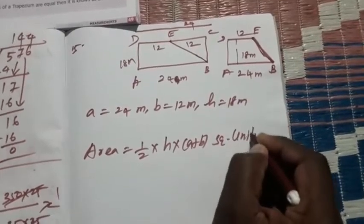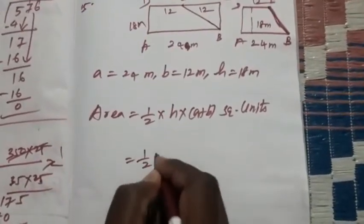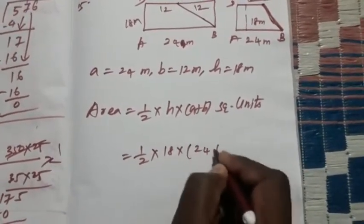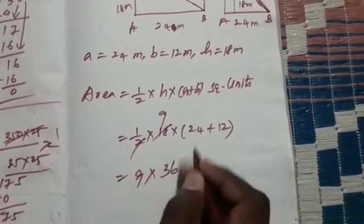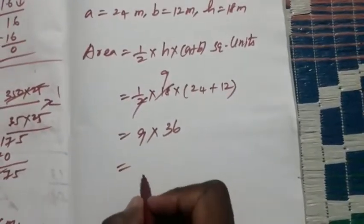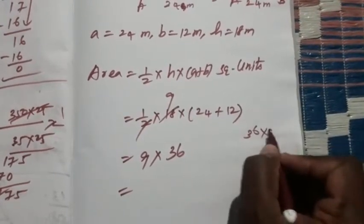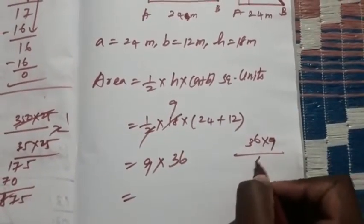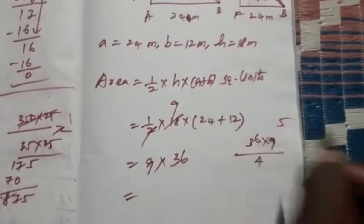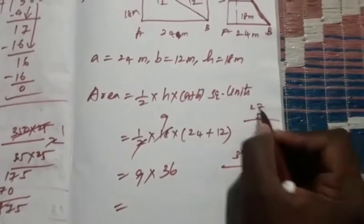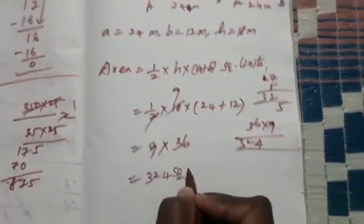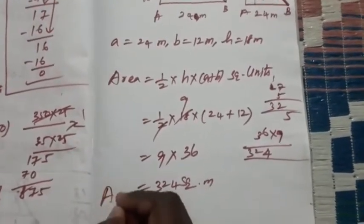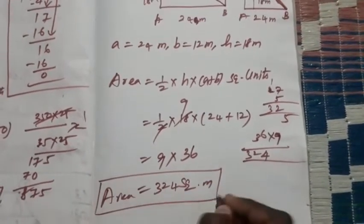Square units. Therefore you see that half into H, what is that? Given 18. A, what is that? 24. B is that 12. So half times of this is 9. 9 into 24 plus 12, we get 36. So 9 into 36, what you get? 36 into 9: 9 sixes are 54, put 4, remaining 5. 9 threes are 27, 27 plus 5, we get 32. Put 2, remaining 1. 1 plus 2 is 3. 324. Therefore 324 square meters. This is the area, 324 square meters. Hence answer over.